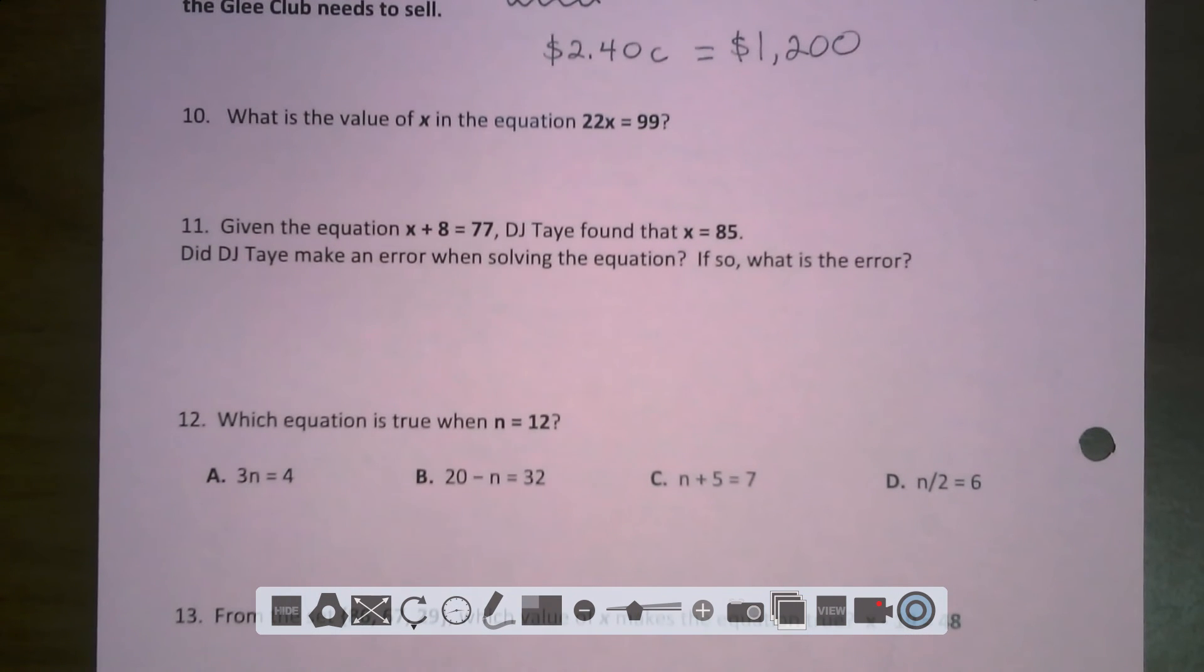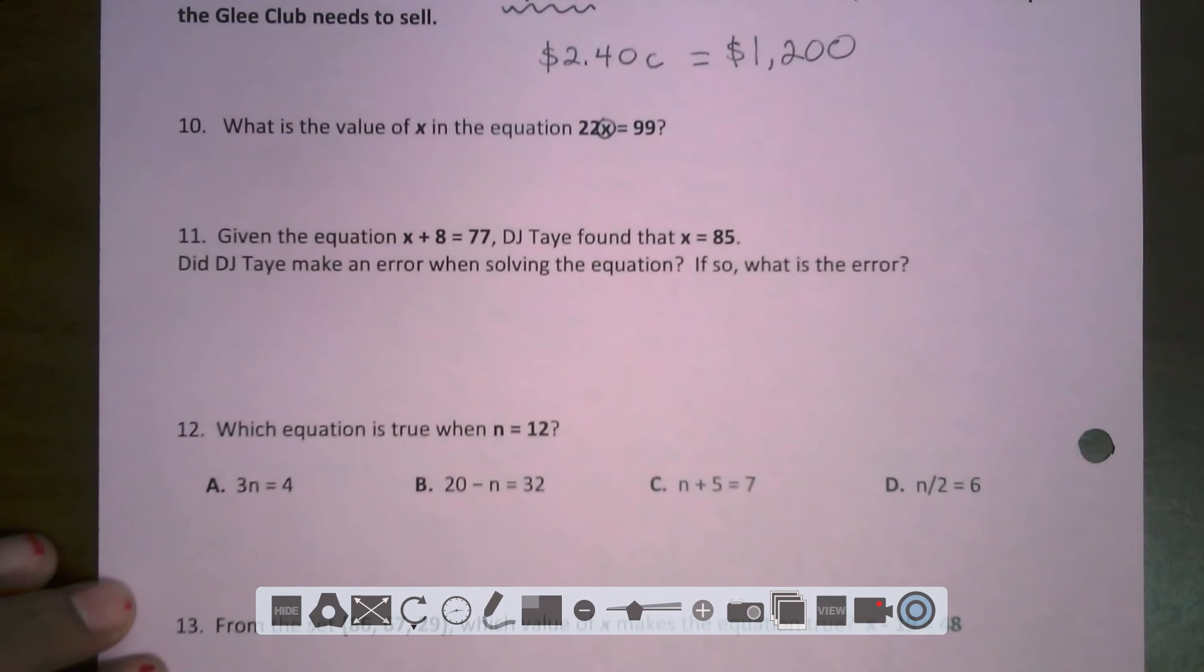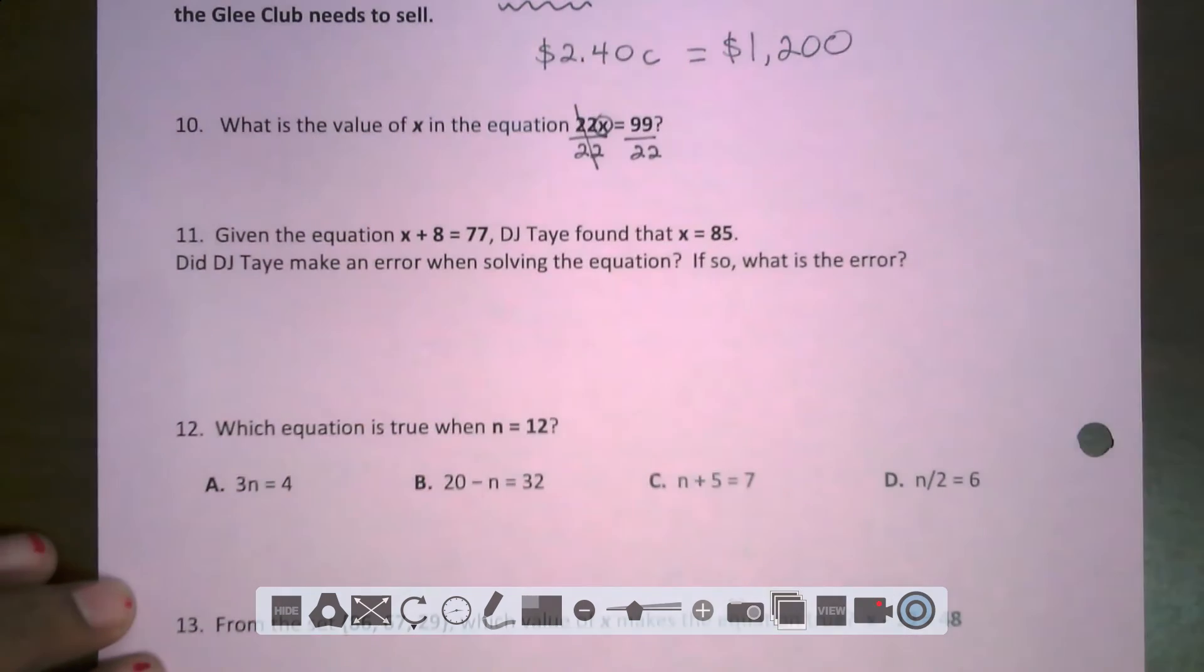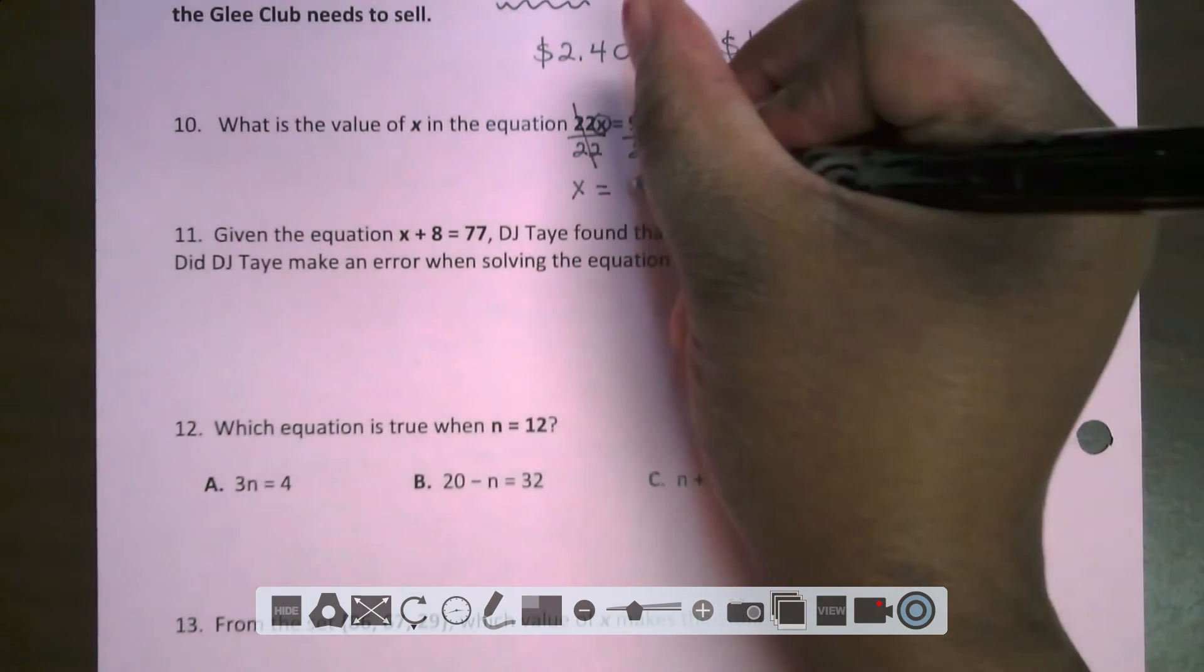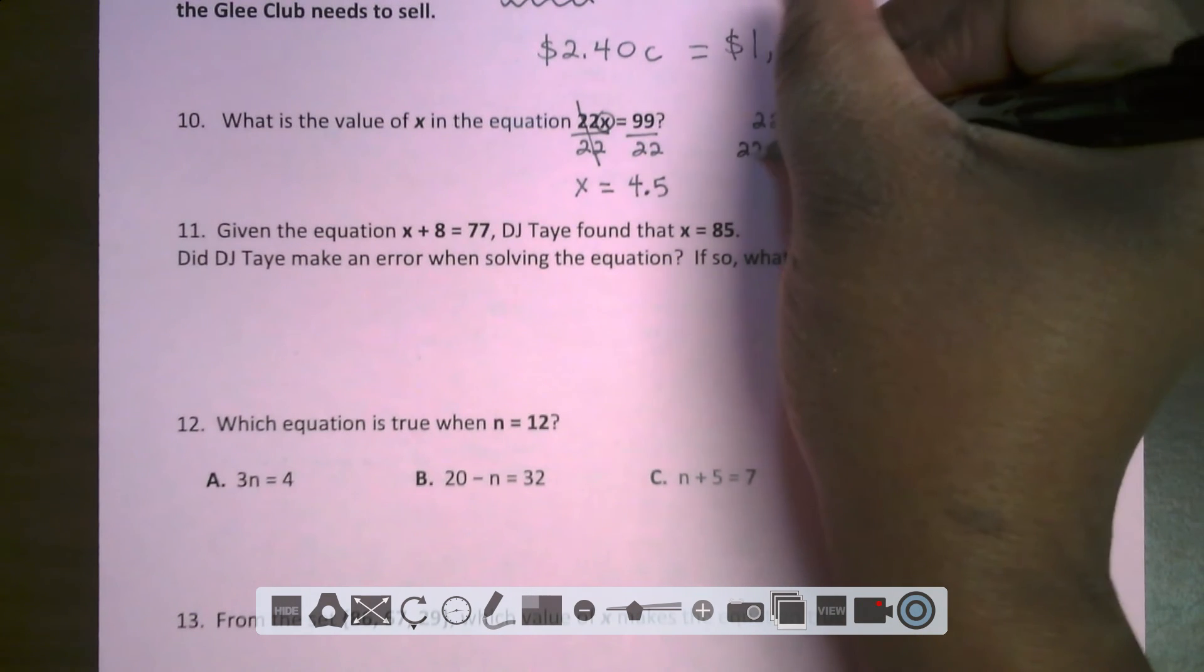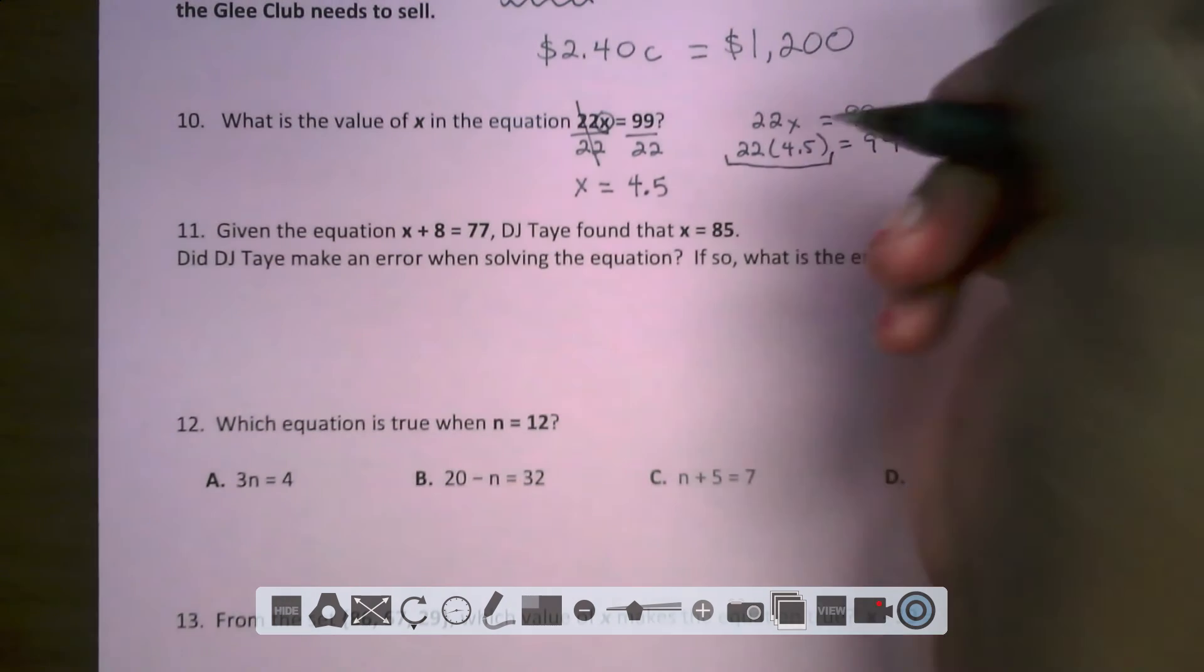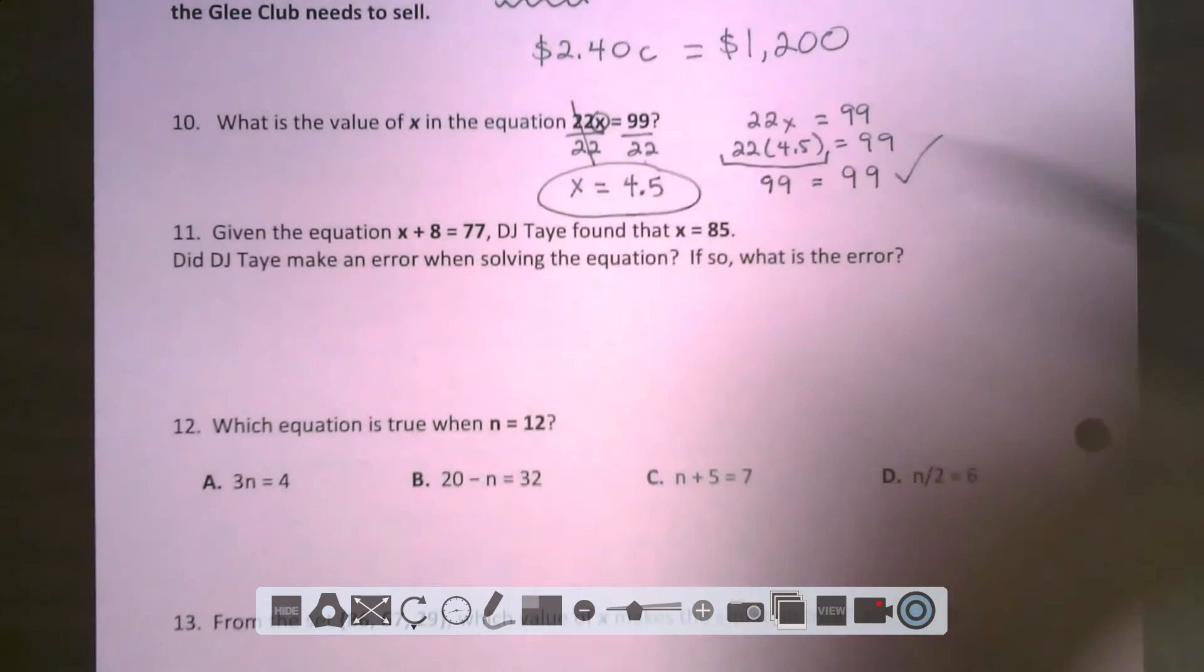Let's look at number 10. What is the value of X in the equation 22X equals 99? We have a one-step equation here. I am going to circle my variable of X. It's being multiplied by 22. The inverse of multiplying by 22 is to divide each side by 22. These 22s cancel out, leaving me just with X. I'm going to pop into the calculator, 99 divided by 22, and I get 4.5. Now it's time for me to check my work. I am going to substitute in my 4.5 for my X. 22 times 4.5, and I am getting 99. So 99 equals 99. My X equaling 4.5 was correct.